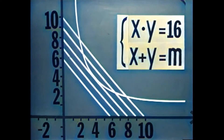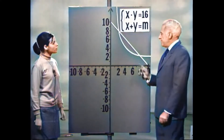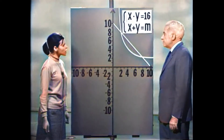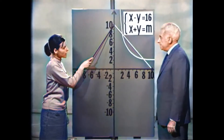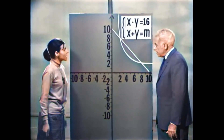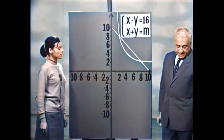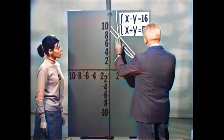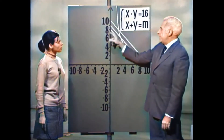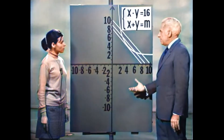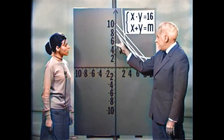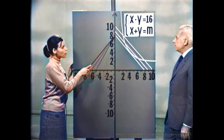נבדוק את המשמעות של הפרמטר M. המספר החופשי M הוא הערך שבו הישר חותך את ציר ה-Y, וגם מחצית אורך הגדר. כאשר M שווה 10, מחצית ההיקף 10; כאשר M שווה 9, מחצית ההיקף 9; וכאשר M שווה 8, הישר משיק להיפרבולה — וגם בפתרון האלגברי מצאנו פתרון אחד כאשר M שווה 8.